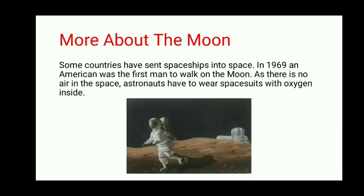In this unit, we have discussed about the three objects of the solar system: the Sun, the Earth, and the Moon. We discussed how the Earth rotates and revolves, and how it causes day and night and changes the seasons. Lastly, we discussed about the Moon. Please read all the chapter at least five times and learn all the difficult words. Thank you.